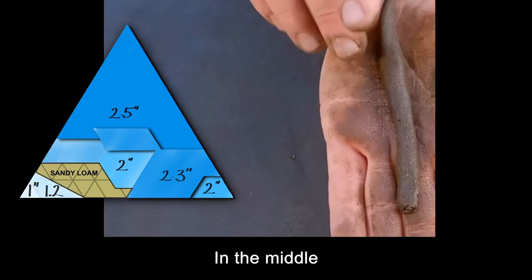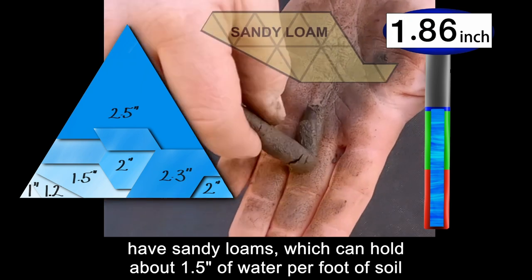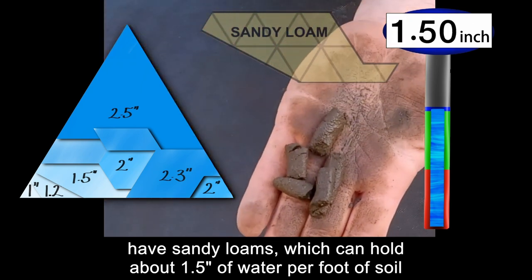In the middle, most farms in BC's Kootenai and Boundary regions have sandy loams, which can hold about 1 and a half inches of water per foot of soil.